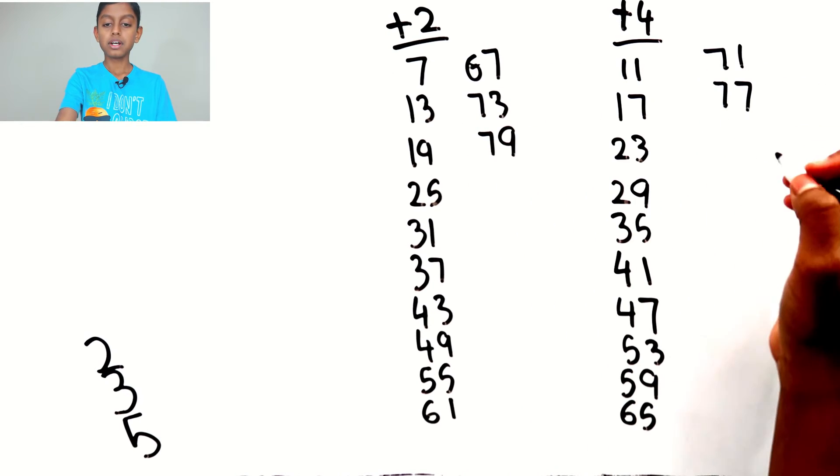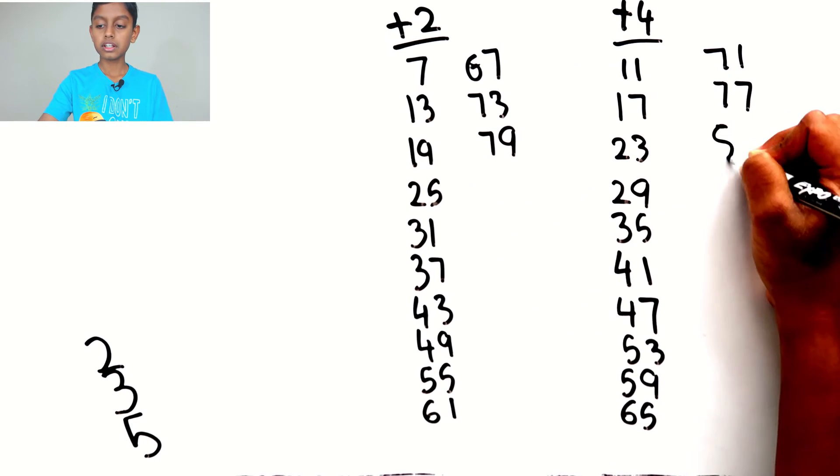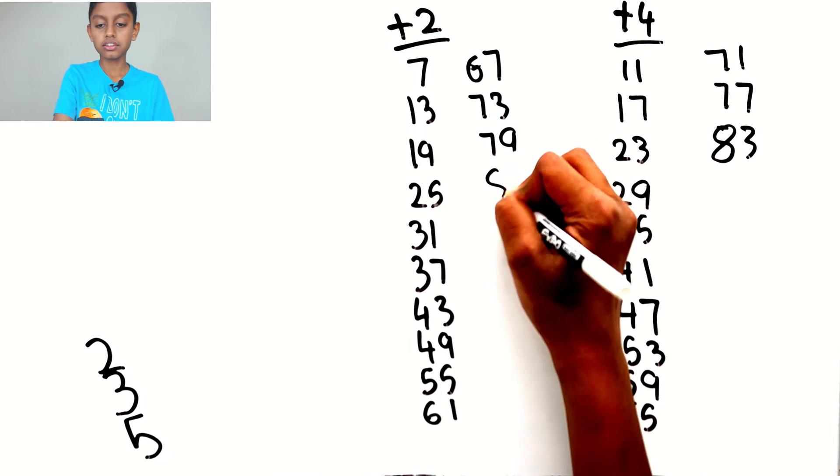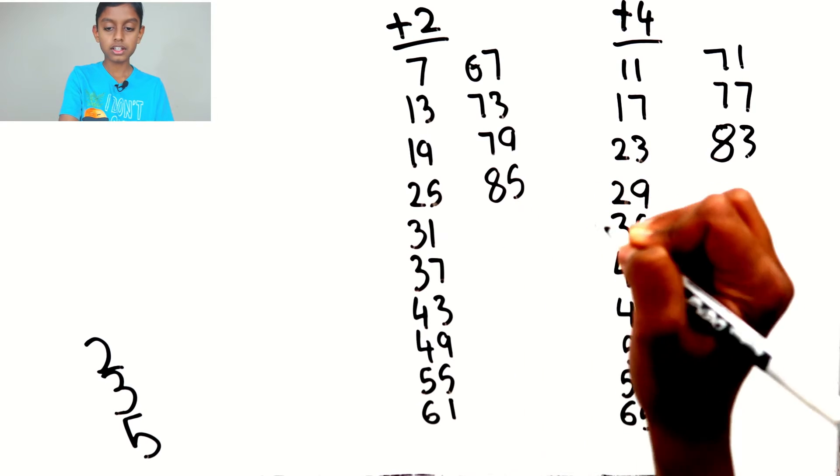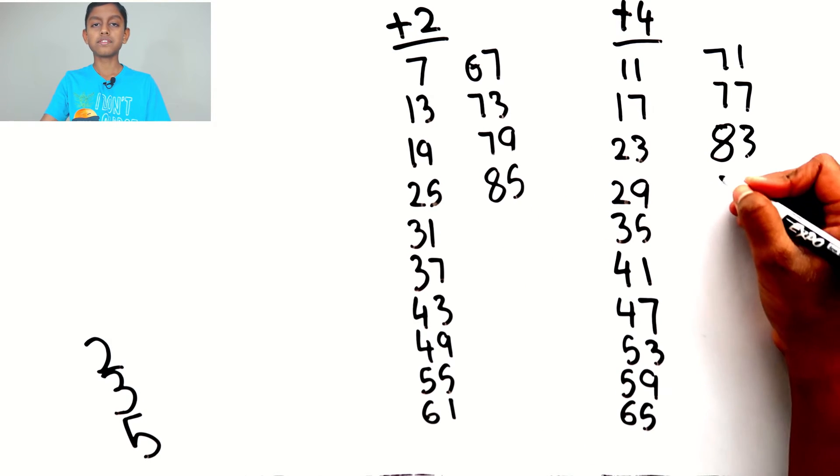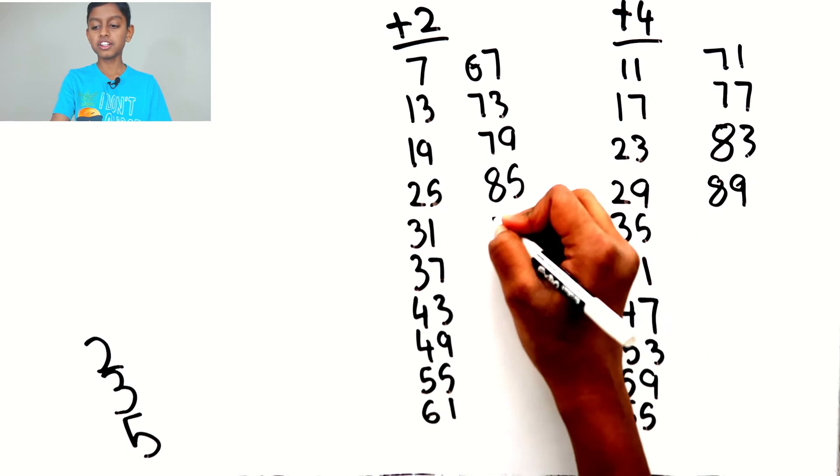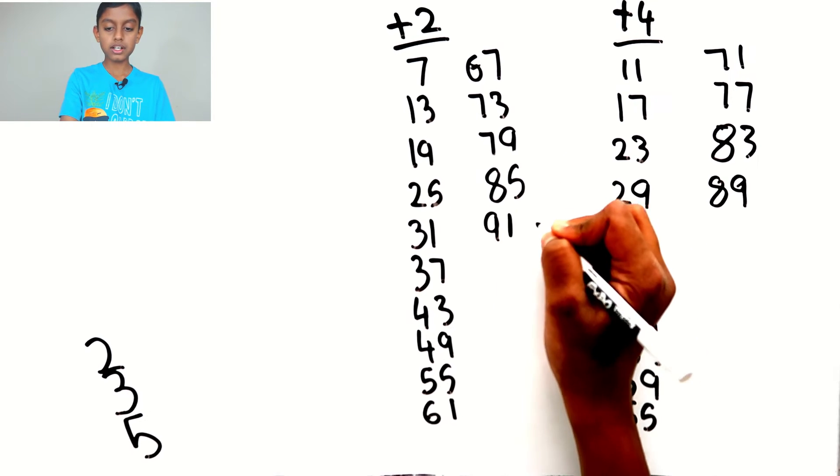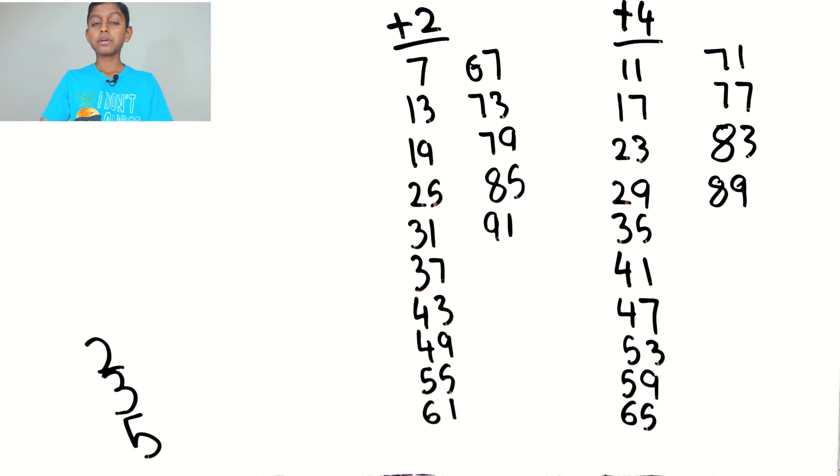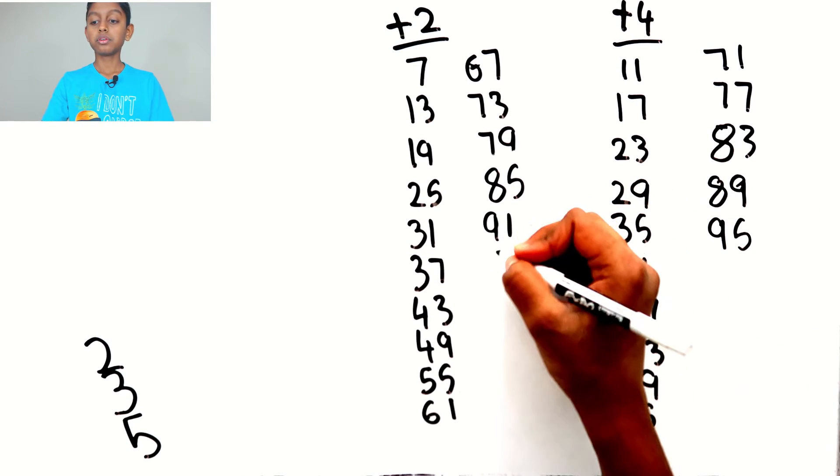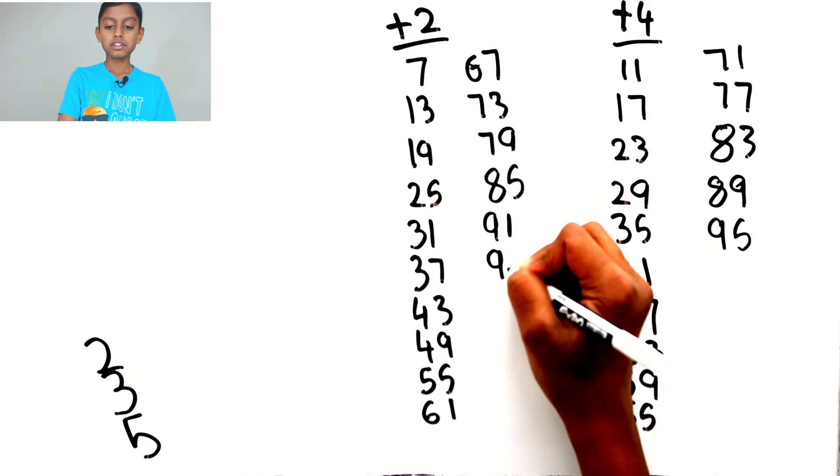Add 4 to 79 to get 83, add 2 to 83 to get 85, add 4 to 85 to get 89, add 2 to 89 to get 91, add 4 to 91 to get 95, add 2 to 95 to get 97.